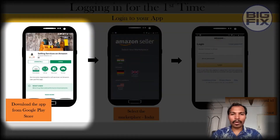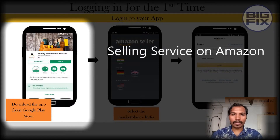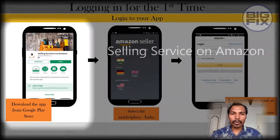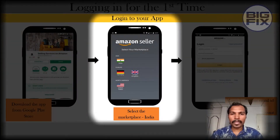This app is available on both Android and iOS. You can download it from Play Store or App Store. The name of the app is Selling Services on Amazon. Download and install the app, and while opening this app for the first time, it will ask for the marketplace — choose India.